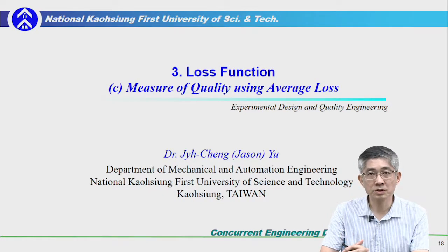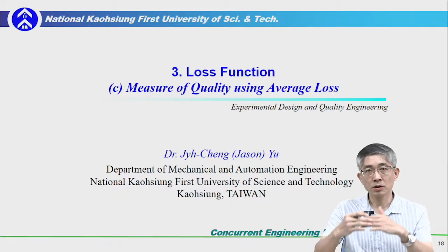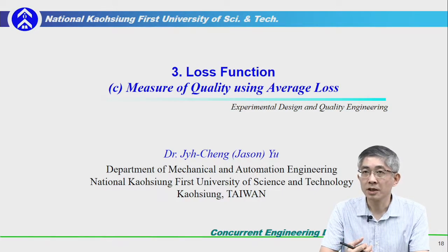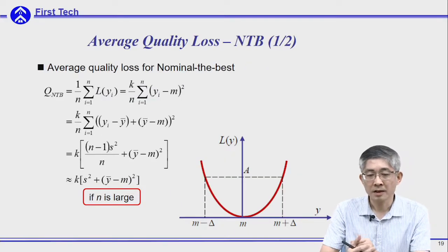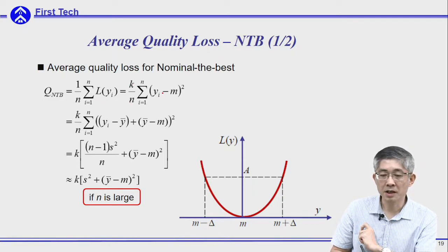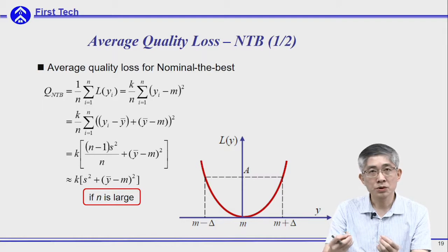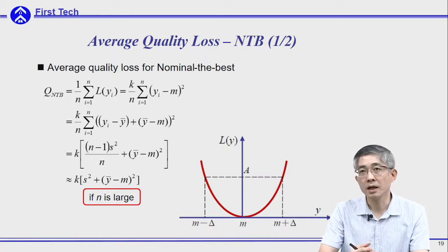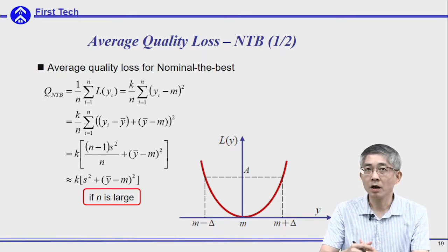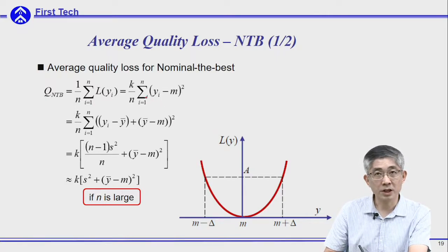Once we have the loss function as a criteria to determine how good your performance is, how do we determine the overall design performance? We use the average loss as the measure of quality. For example, for the nominal-the-best case, the quadratic loss function L(y) equals k multiplied by (y minus m) squared. To estimate how good your design is, you take n samples, substitute the performance of each instance into the equation, sum it up, and take the average.